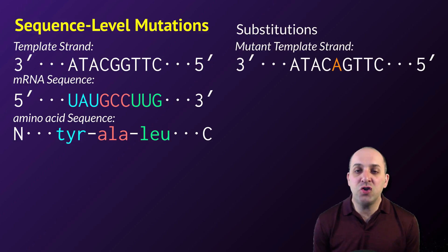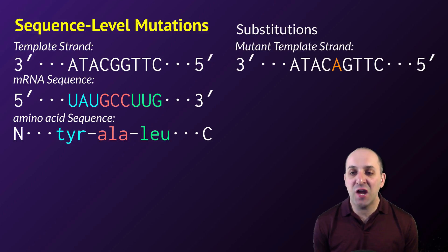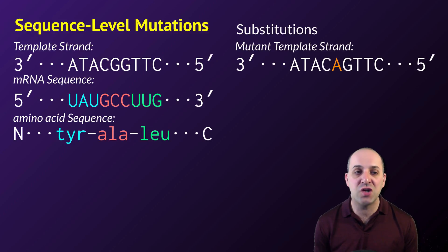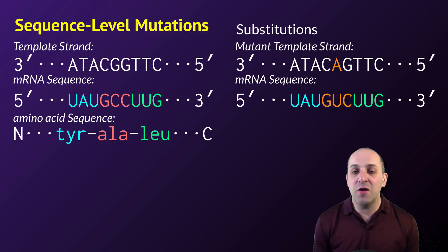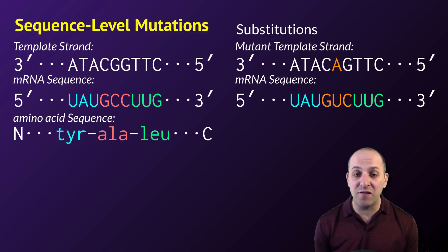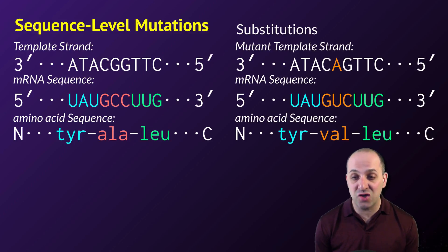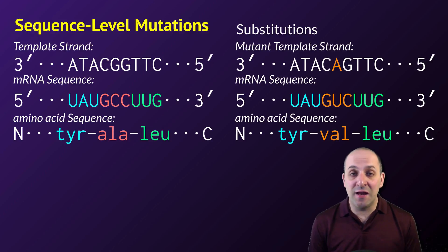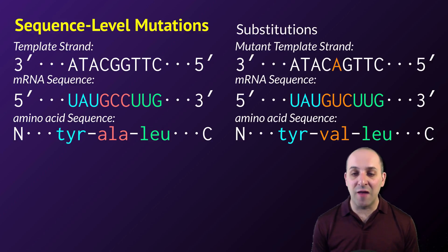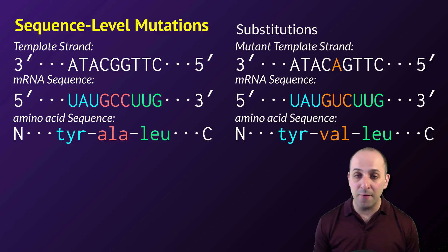In a substitution mutation, one base in the DNA is changed into another base. In this case, we're changing a guanine into an adenine. This leads to a change in the mRNA sequence, which can lead to a change in the amino acid sequence. Instead of putting alanine into the polypeptide chain, this mutation has led to the substitution of valine.